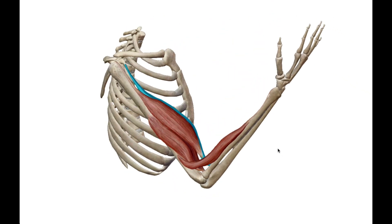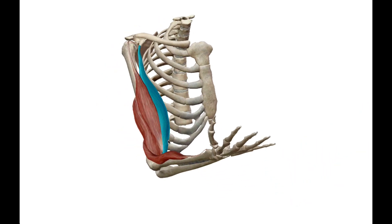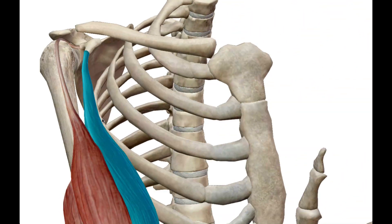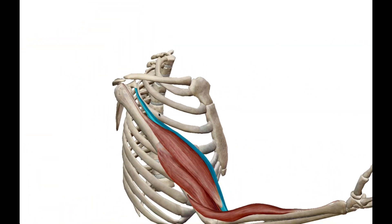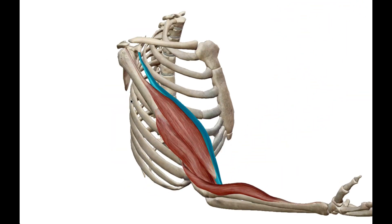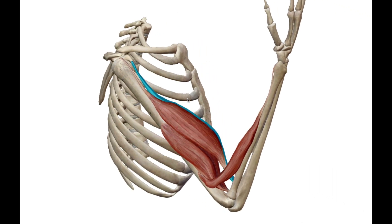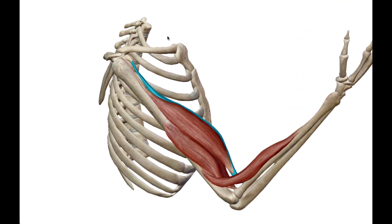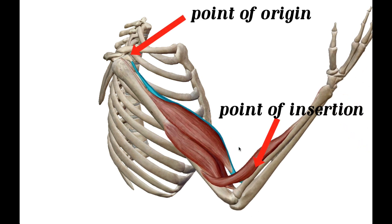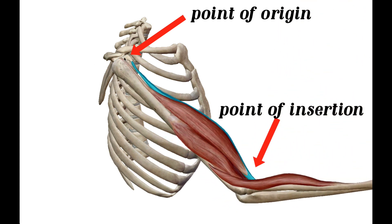The text uses the biceps as the classic example for a lever. So let's first see where the biceps is connected — we see its point of origin. When you're trying to distinguish the point of origin from its insertion, think of the part of the limb that has the least relative movement, compared to the part having the most movement. Here at the elbow we're having the most movement, and up at the shoulder we're having the least — that's the point of origin for the biceps.